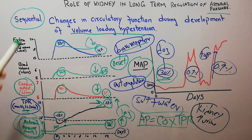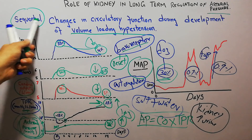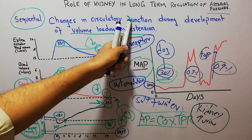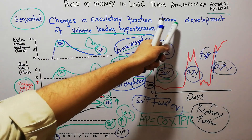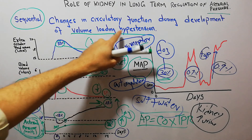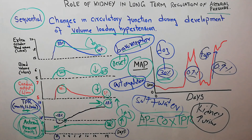That is all about the sequential changes in circulatory function during development of volume loading hypertension. Thanks a lot for watching the video.